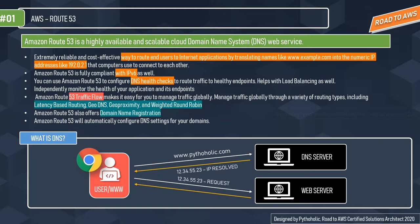Route 53 is an extremely reliable and cost-effective way to route end users to internet applications by translating names like pytholic.com into numeric IP addresses like 192.0.2.1 that computers use to connect to each other. Amazon Route 53 is fully compliant with IPv6 as well. You can use Route 53 to configure DNS health checks to route traffic to healthy endpoints, and it also helps with load balancing.